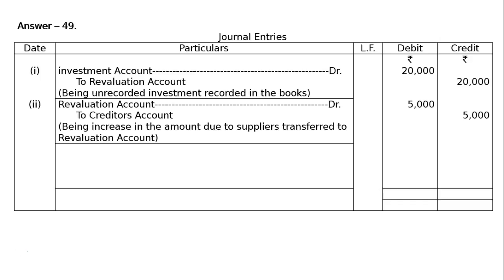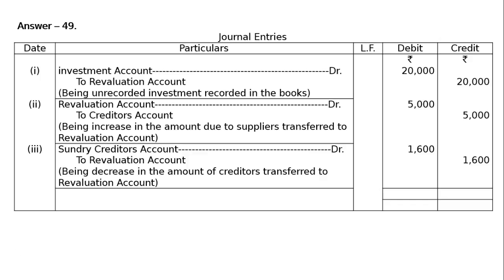The revaluation account is also called the profit and loss adjustment account. Third entry: An item of Rs 1,600 included in sundry creditors is not likely to be claimed and should be written back. Sundry creditors account is debited and revaluation account is credited — Rs 1,600 each. Being decrease in the value of creditors transferred to revaluation account. Decrease in liability is income for the firm, hence credited to revaluation account.